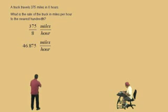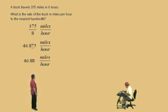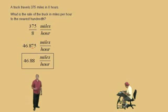And now we're asked to round to the nearest hundredth. Which digit is in the hundredths place, Charlie? 7. That's right. Now we look at the next digit, which is a 5. And because, remember, 5 or greater means you're going to round up. And so our answer is 46.88 miles per hour. That means we're going 46.88 miles per 1 hour. That's what it means.